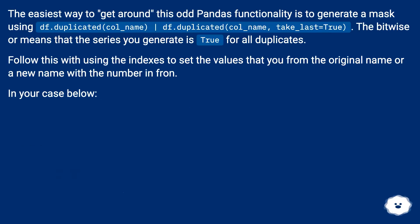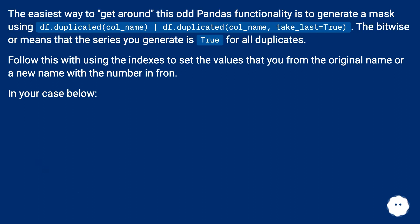The easiest way to get around this odd pandas functionality is to generate a mask using df.duplicated('col_name') | df.duplicated('col_name', keep='last'). The bitwise OR means that the series you generate is true for all duplicates.